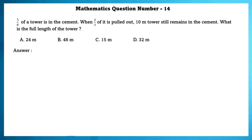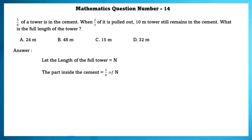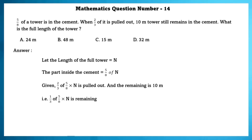Mathematics question number 14. 5 by 8 of a tower is in the cement. When 2 by 3 of it is pulled out, 10 m of tower still remains in the cement. What is the full length of the tower? Let full length be N. Then 1 by 3 of 5 by 8 into N equals 10 metres, so N equals 10 into 3 by 1 into 8 by 5, that is 48 metres.